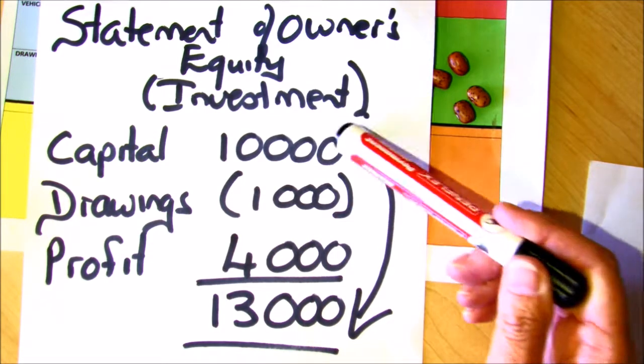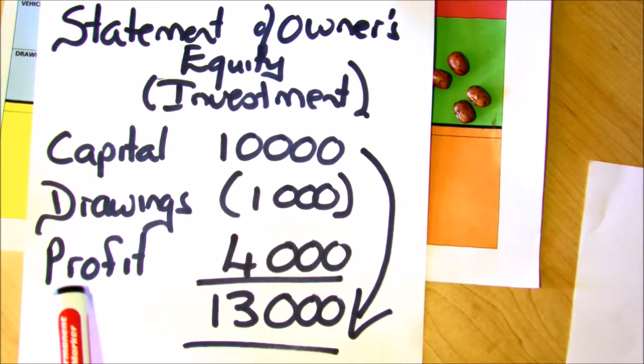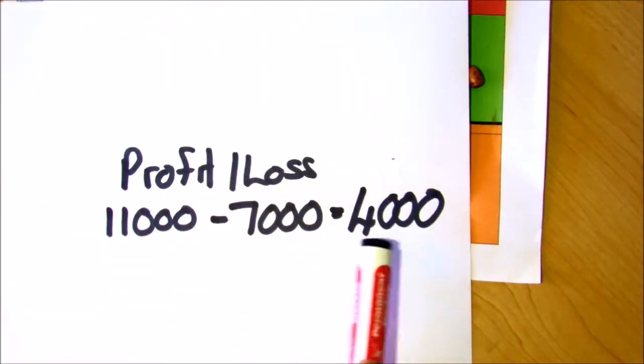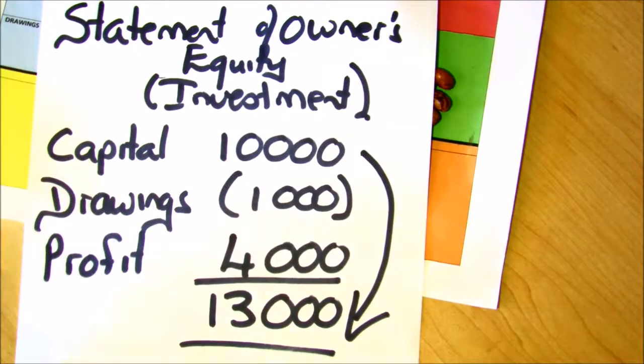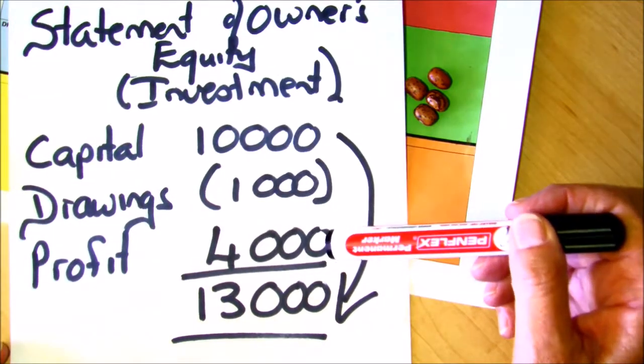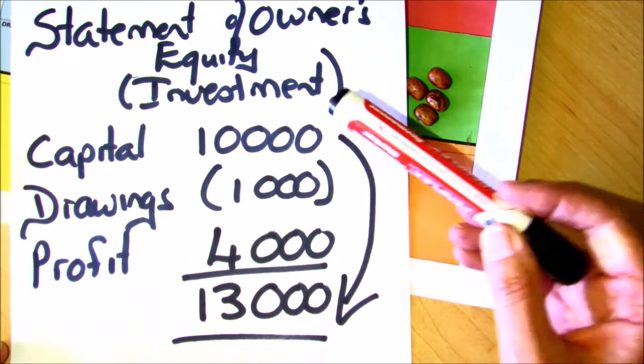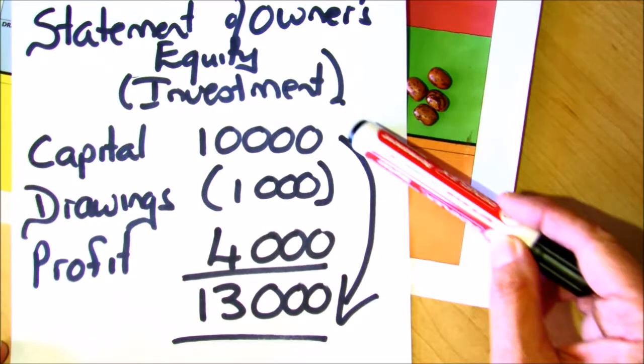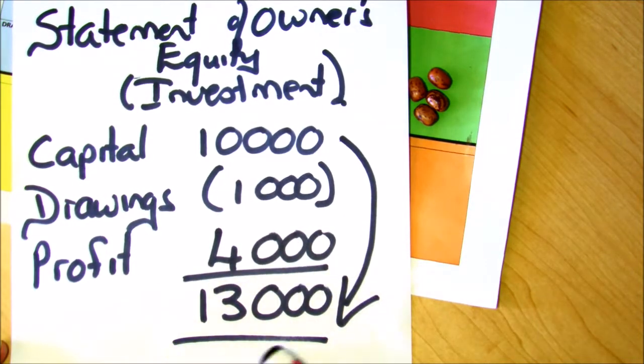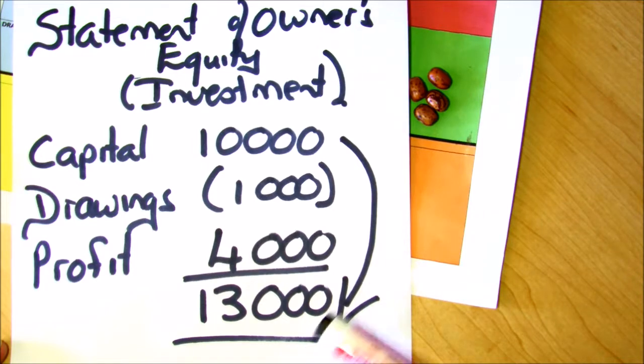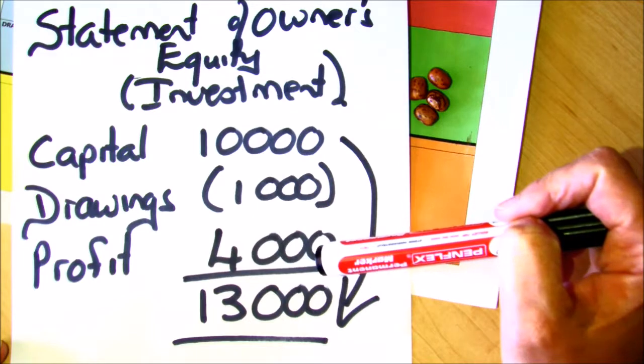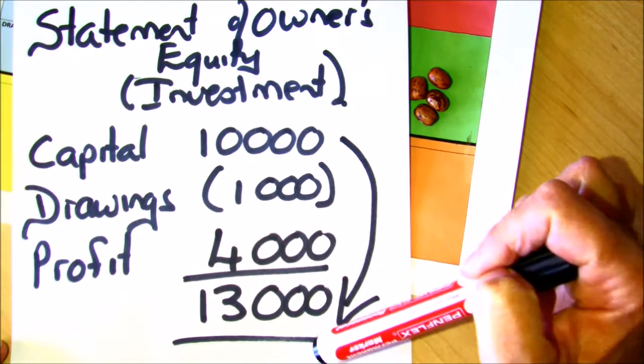But this business has made a profit - remember we said that we made a profit of 4,000 - and this profit belongs to the owner and gets added onto his investment. And so his investment which was 10,000 at the beginning has now grown to 13,000. Why? Because he put capital into the business which involved a risk, he earned a profit, and is now worth more.